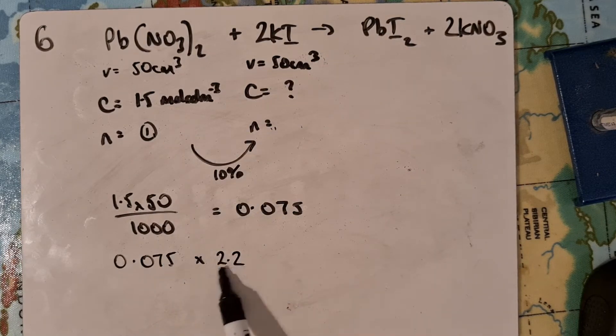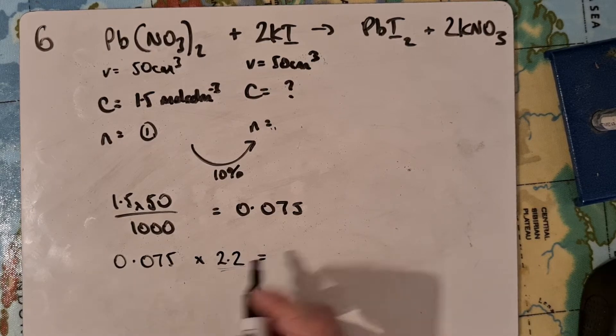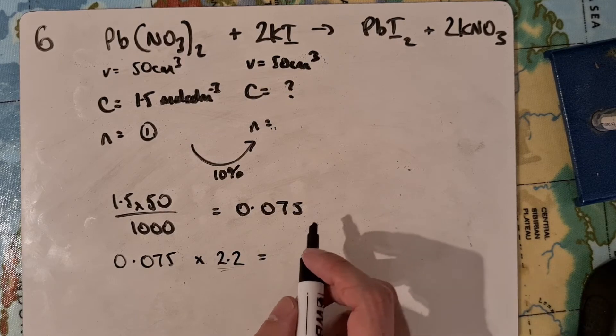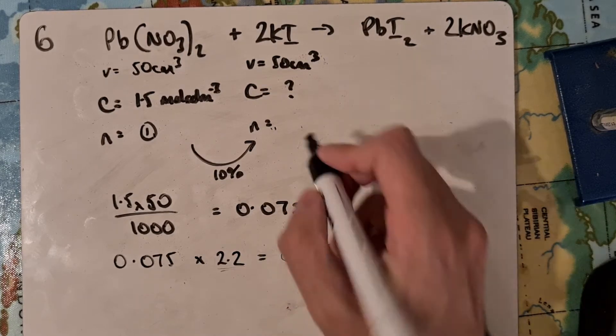Now though, because we want 10% more, 10% of 2 is 0.2. We're going to times it by 2.2 to give us 0.165 moles here.